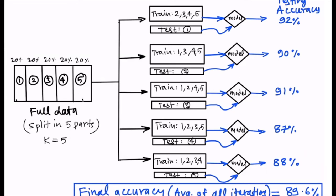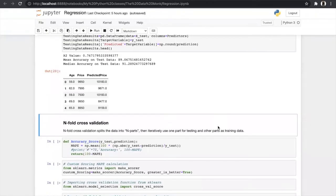With 5-fold cross validation we perform five different test/train combinations. In the first test, parts 2–5 are training data and part 1 is testing. In the second test, part 2 is testing and parts 1, 3, 4, 5 are training — and so on. After finding the testing accuracy for all five, we take the mean. For example, accuracies of 92%, 90%, 91%, 87%, 88% give a mean of 89.6%, which is our final accuracy.